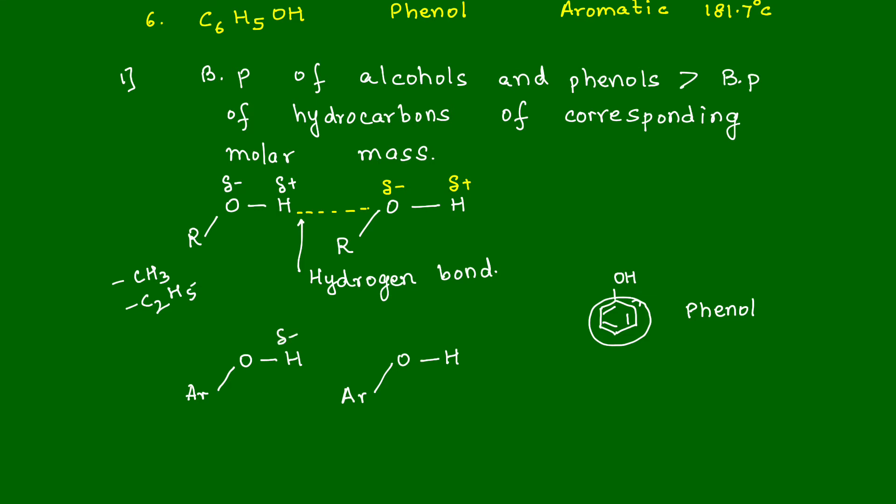For this ring portion, instead of drawing the full ring, I'm just simply writing it as AR. So we have A-R-O-H, A-R-O-H. Delta positive, delta negative, delta negative, delta positive. Again, there's a force of attraction what we call as hydrogen bond. So hydrogen bond develops between the two molecules of phenol as well, giving them a higher boiling point compared to the corresponding hydrocarbons.